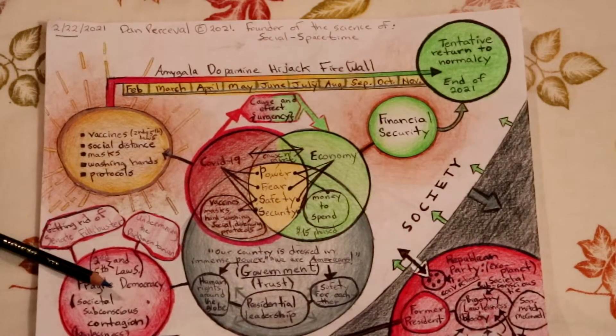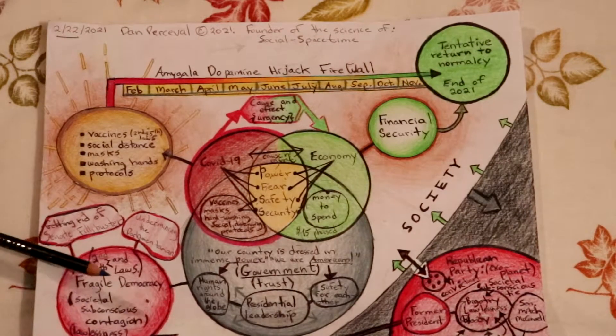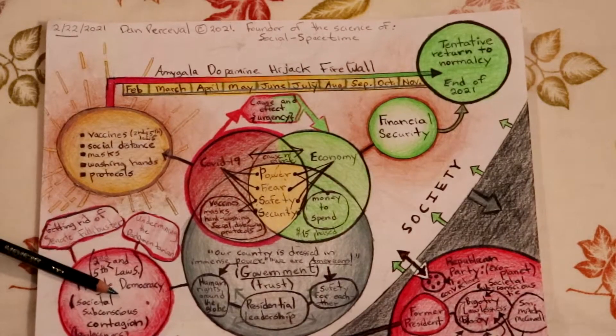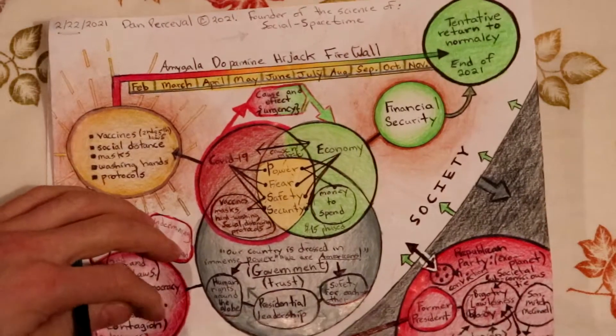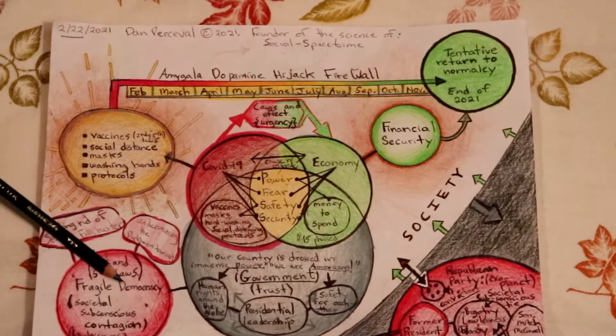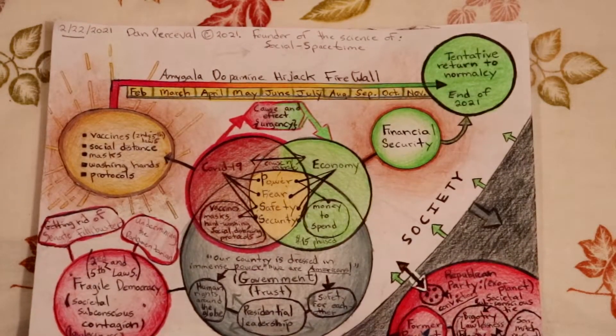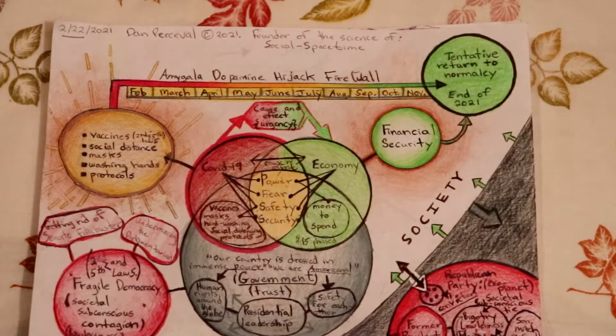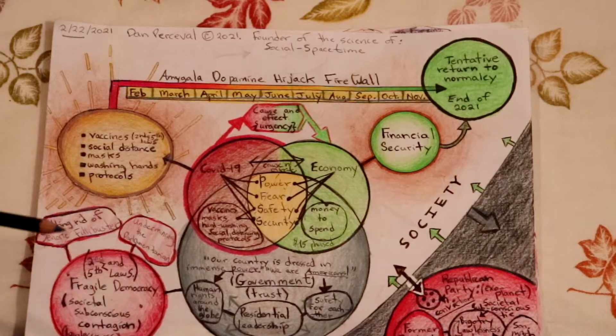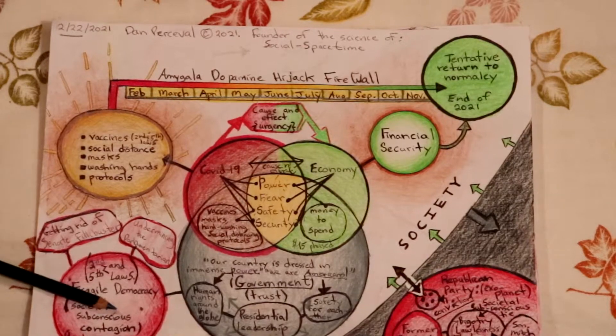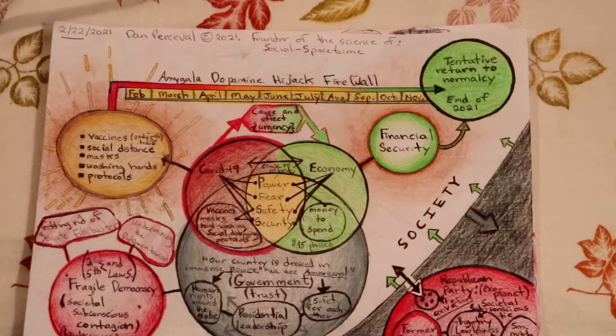Over here, as I mentioned, fragile democracy, it says societal subconscious contagion. Subconscious contagion is something that's below the level of consciousness. So that this is in your mind, but it's not necessarily in your forethoughts all the time. So what that means is that it's something that affects our behavior, but at the subconscious level. Which is, this is the direct cause of the former president, as well as failure of conviction in the Senate to which this was created, particularly over the last four years.